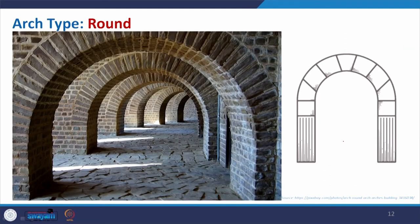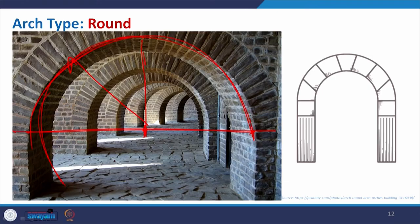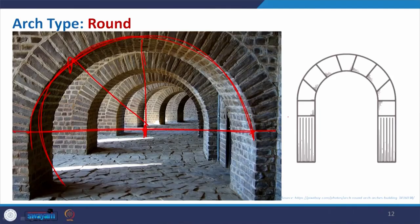Coming to the round arch: the arch form gives a completeness of the circle. It is basically a semicircular form where the center is fixed at the bisection of the horizontal line and the radius is rotated, giving a round form with symmetry. We discussed the India Gate example, which has this kind of round arch. The masonry layout also has symmetry. The center is fixed, and this gives you the rise, forming a complete round arch.